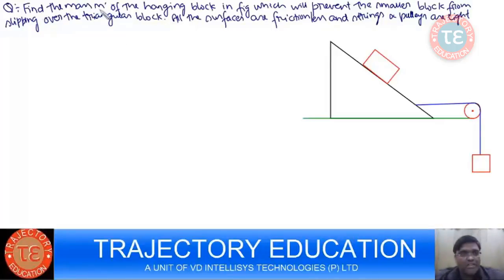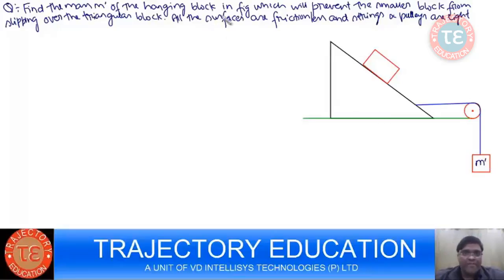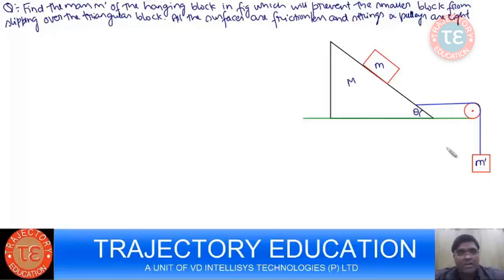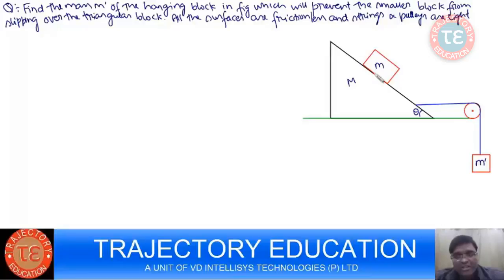See this question: find the mass M' of the hanging block. In this figure, which will prevent the smaller block M from slipping over the triangular block of mass capital M? This is your angle theta. So find the mass M' of the hanging block which will prevent this smaller block M from slipping over the triangular wedge. We have to find M' such that the rectangular block does not slip over the wedge.